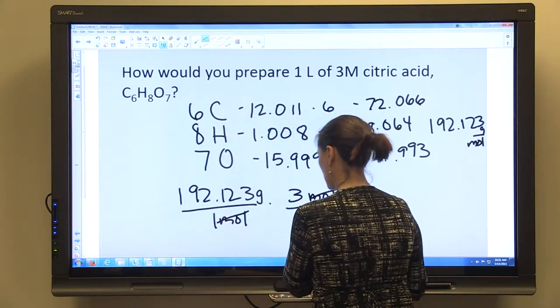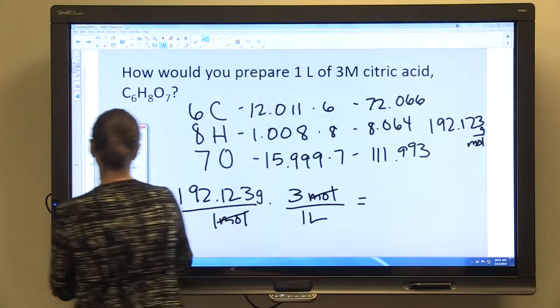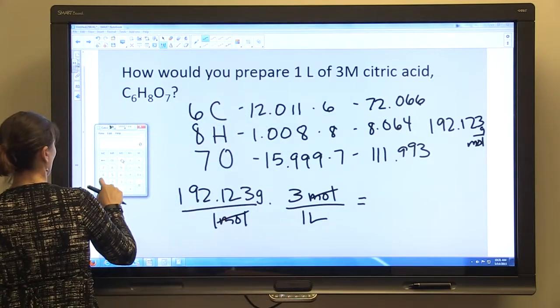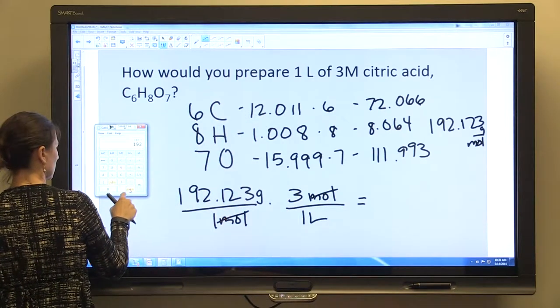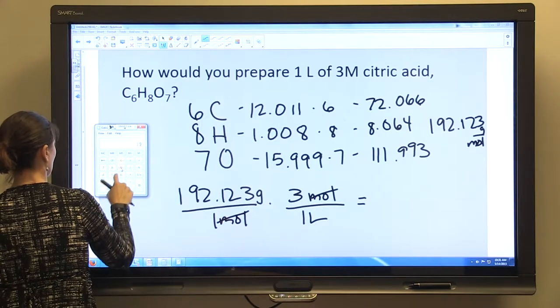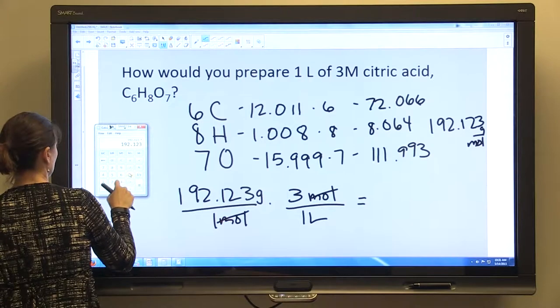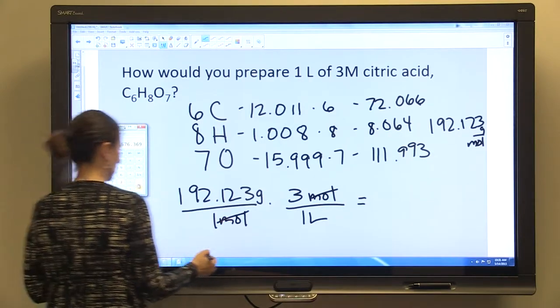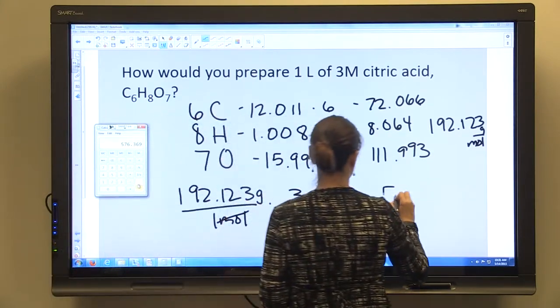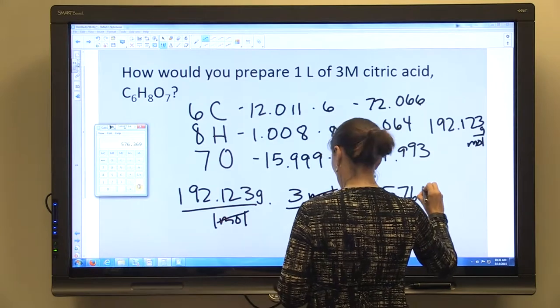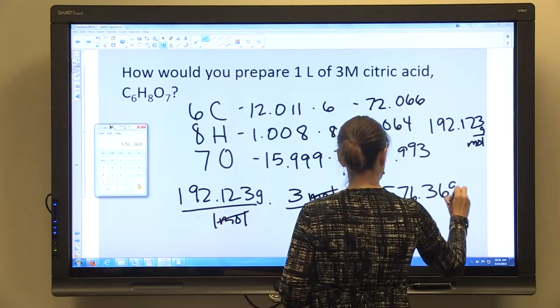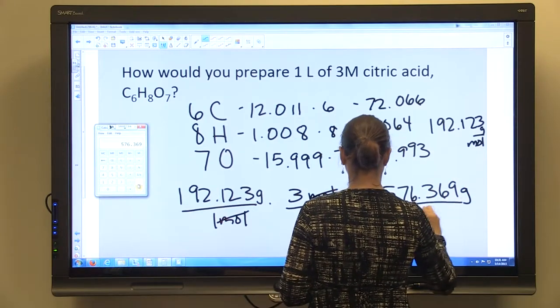192.123 times 3 equals 576.369 grams per one liter.